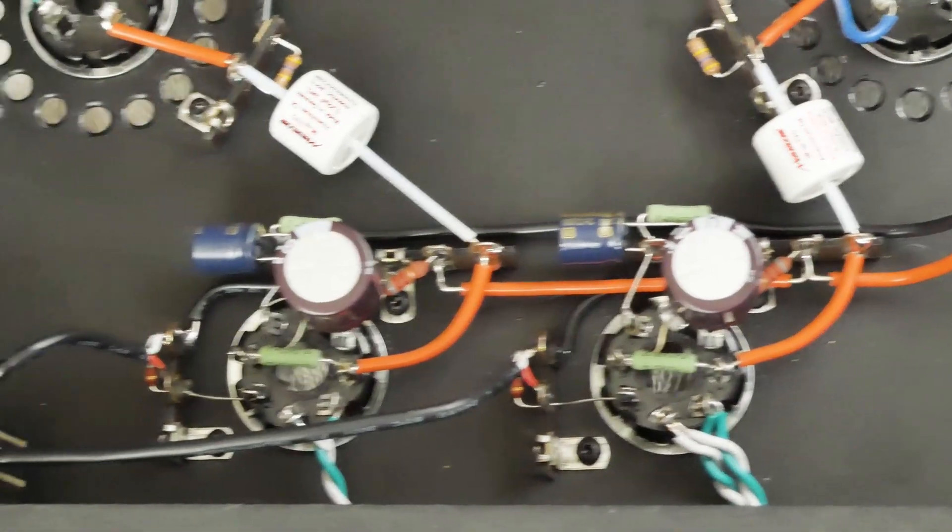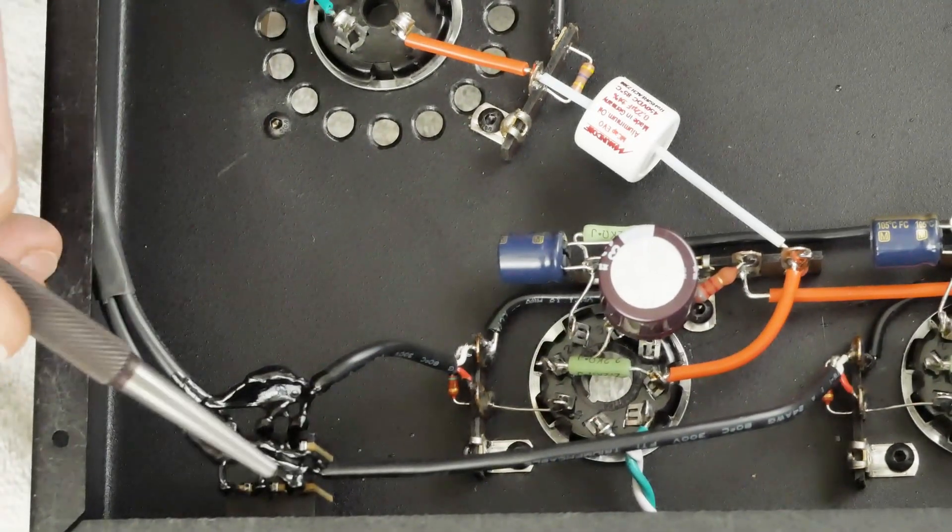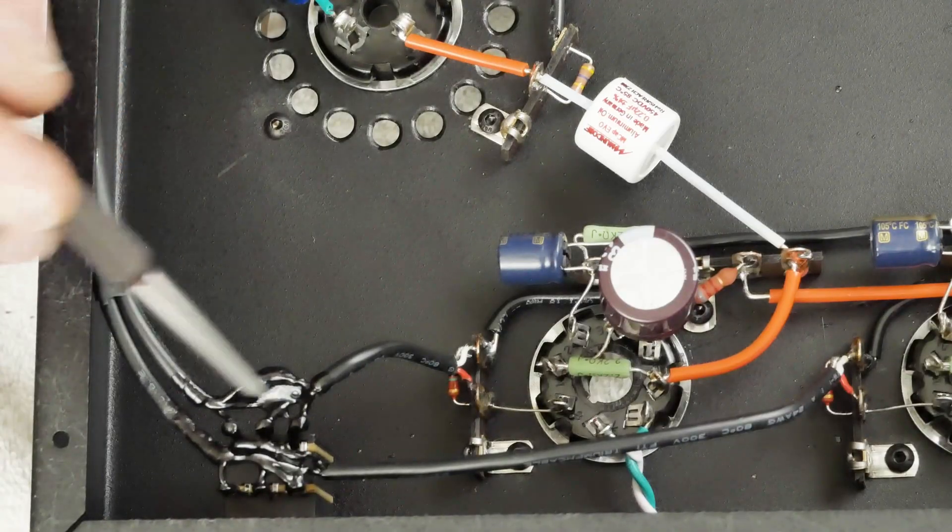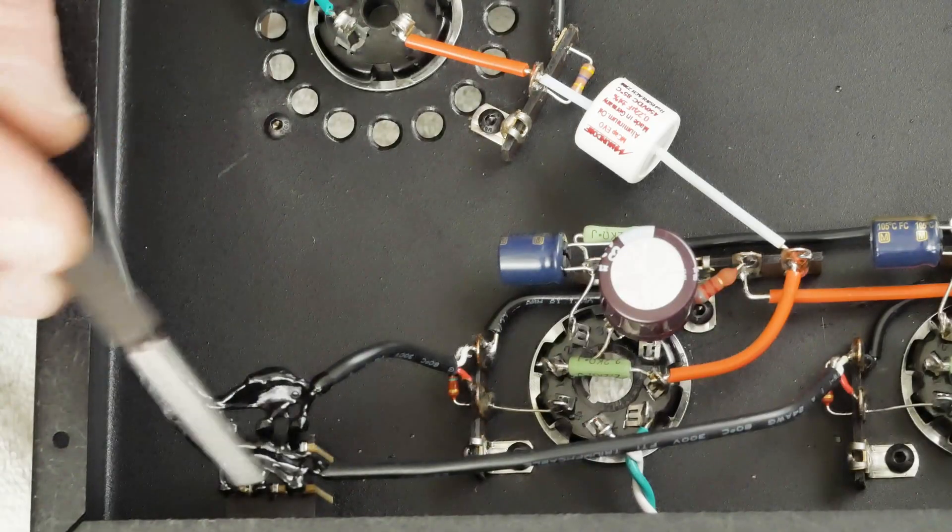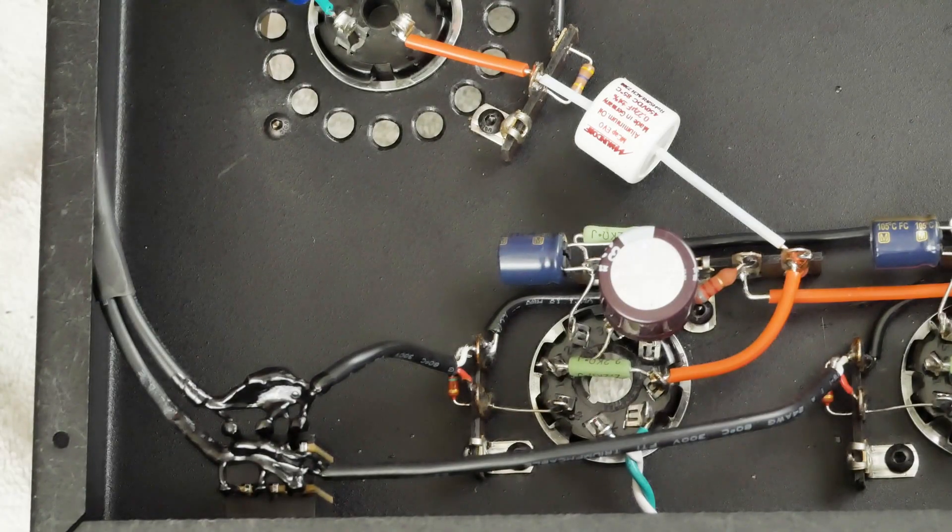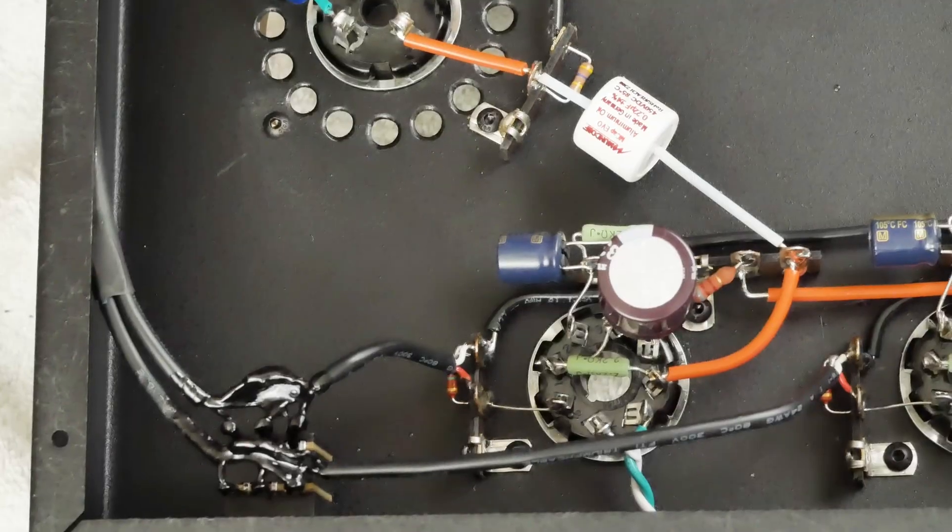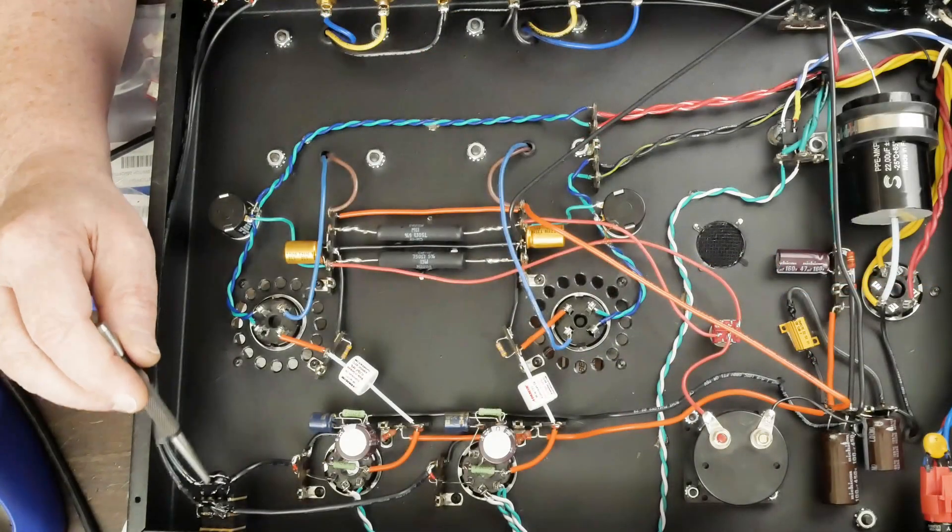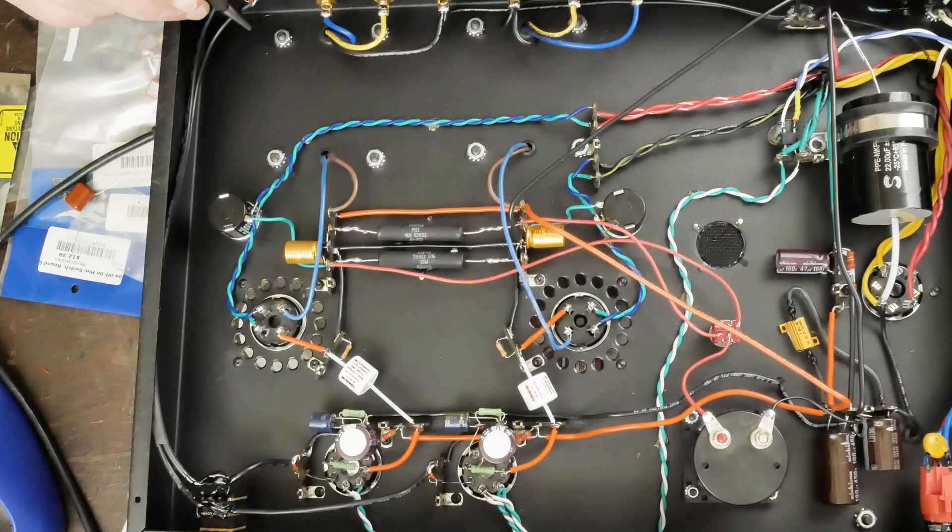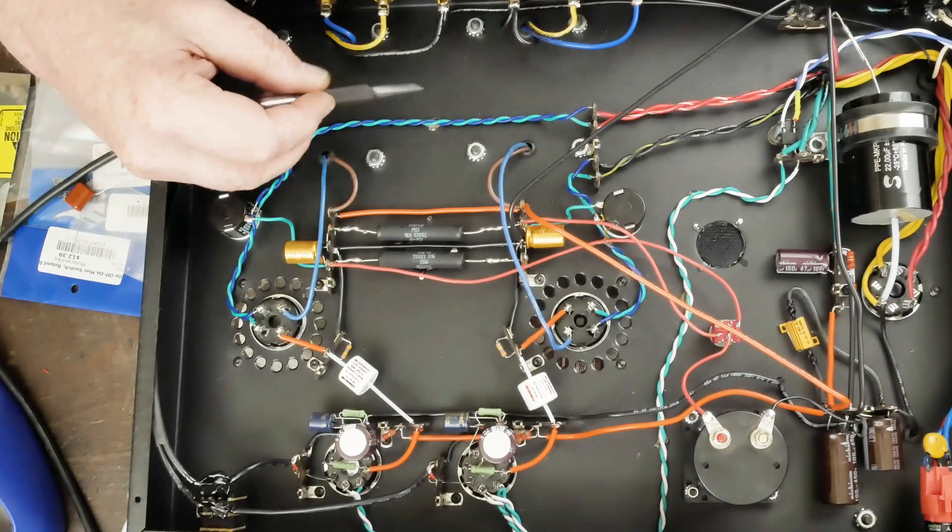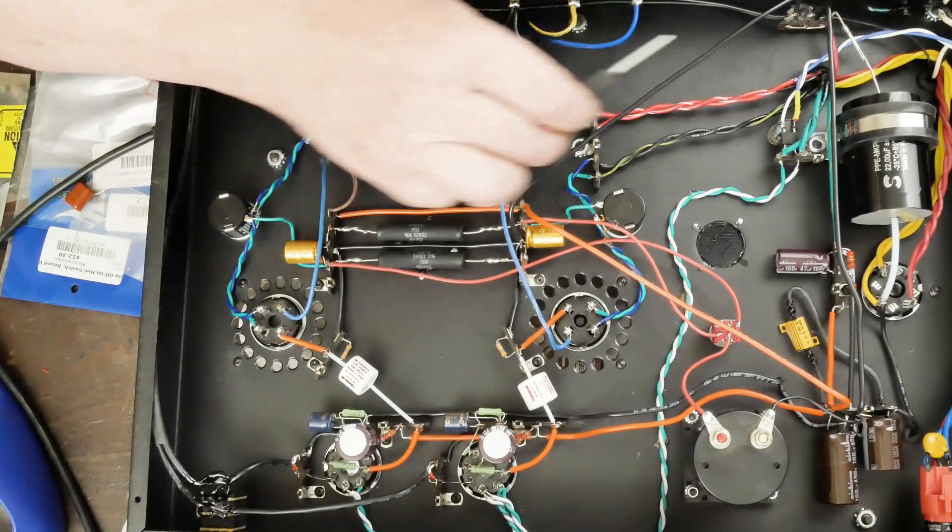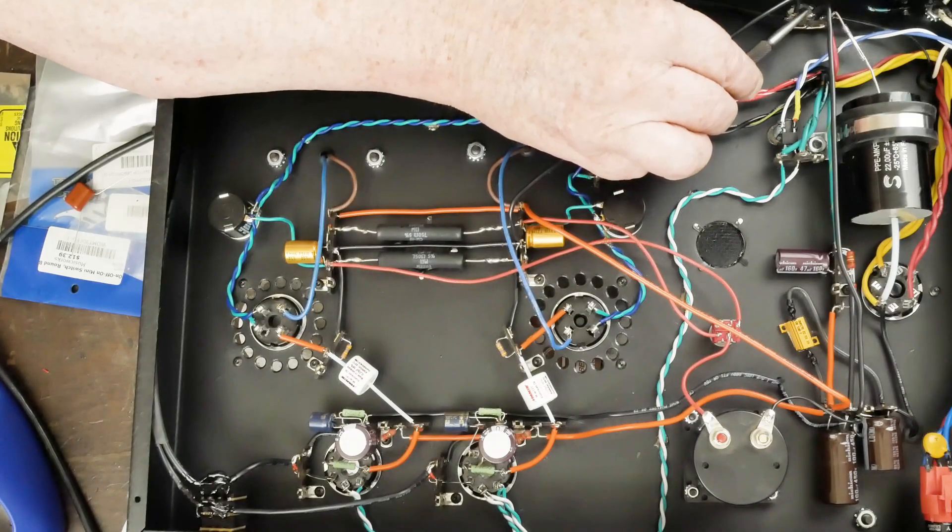Over here we have our volume control. I've showed you how to wire these things up in the past - if you haven't seen that, I'll link a video on how to wire up a volume control. I put this liquid electrical tape over all this stuff to hold everything in place. We have the volume control up here in the front, and these are the shielded wires that come around here and go to our RCA jacks here in the back.